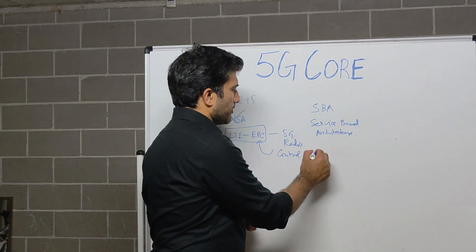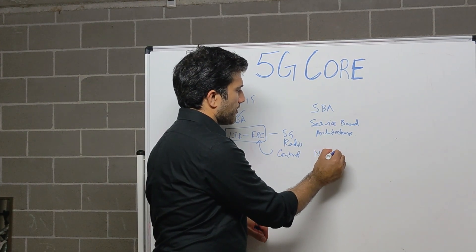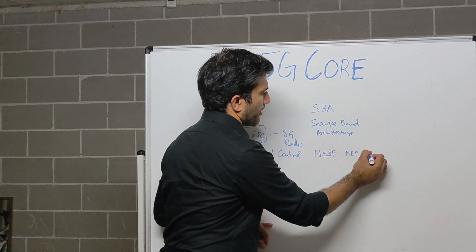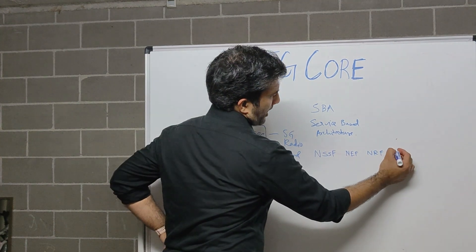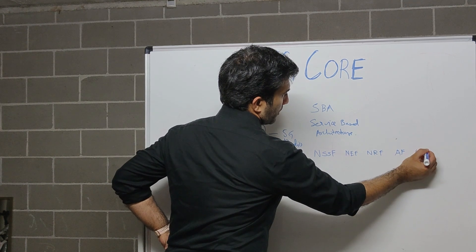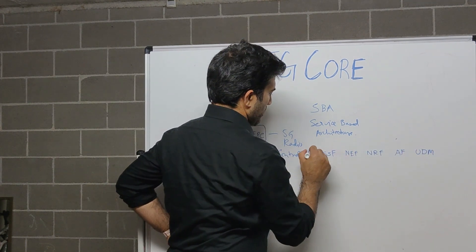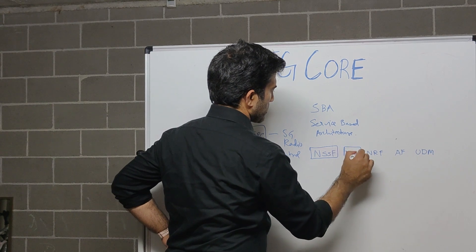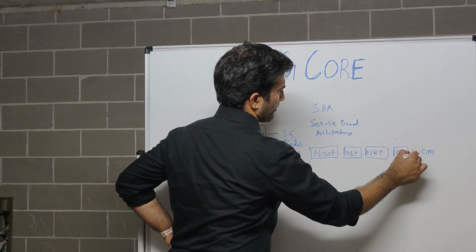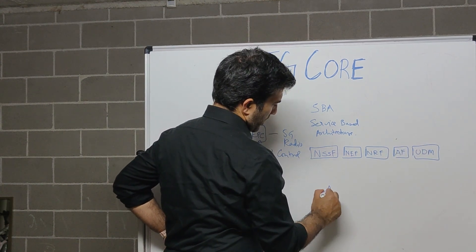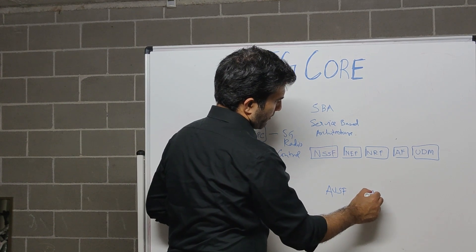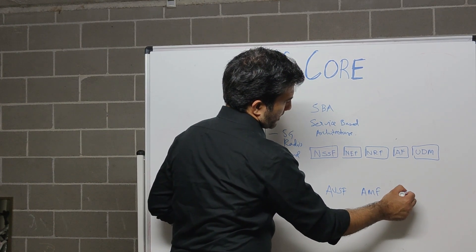So let's try to write this down. So this is NSSF, then we have NEF, then we have NRF, then we have AF, then we have UDM. Then we make those blocks. Then we have your AUSF, then we have ABF, SMF.